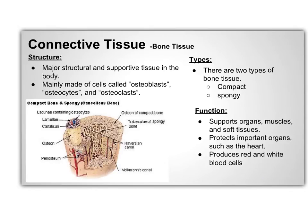Bone tissue is a kind of connective tissue and is a major structural and supportive tissue in the body. Bone tissues are mainly made of cells called osteoblasts, osteocytes, and osteoclasts. There are two different types of bone tissue: compact and spongy. Bone tissue supports organs, muscles, and soft tissues, and also protects vital organs such as the heart. It also produces white and red blood cells and stores minerals.